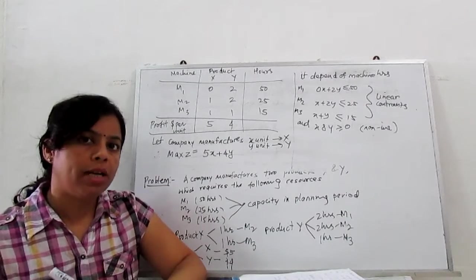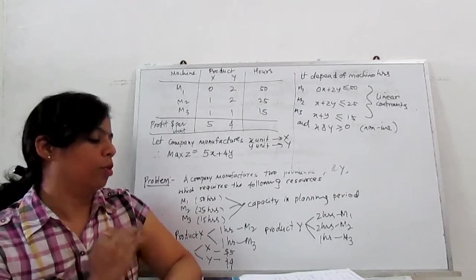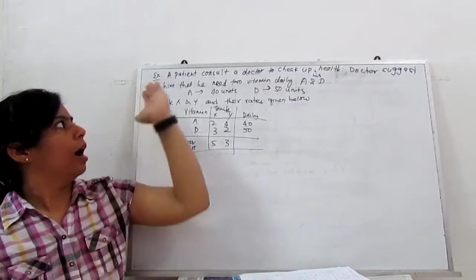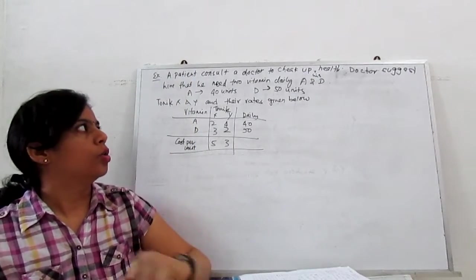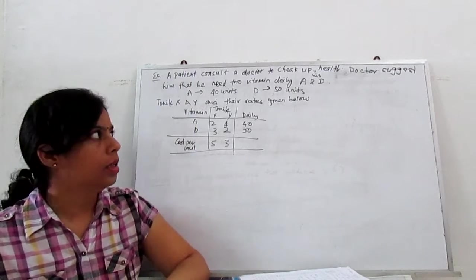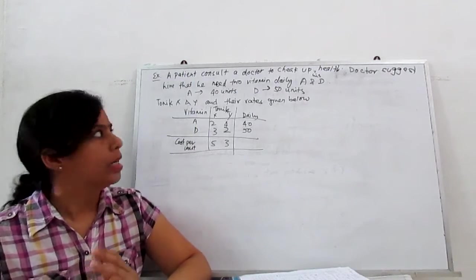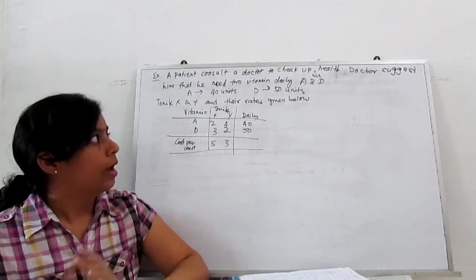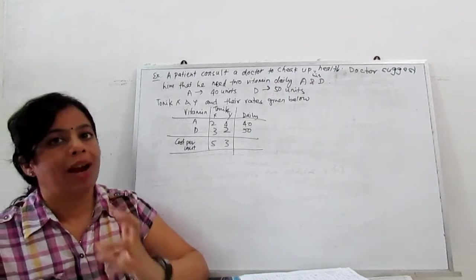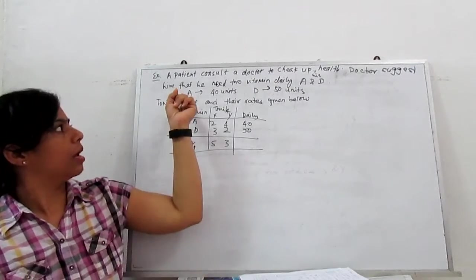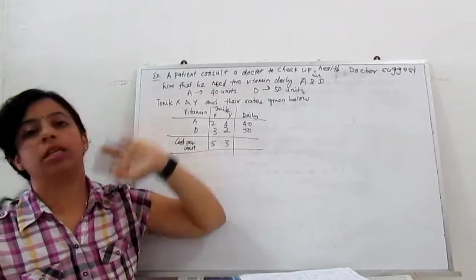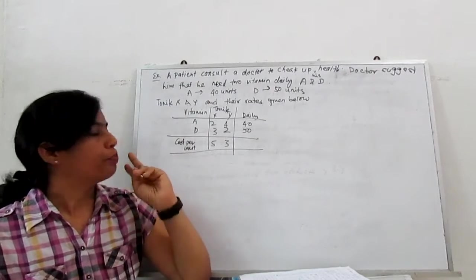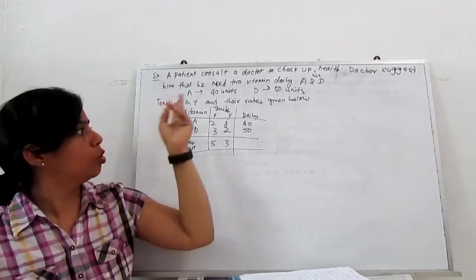Now I will show you one minimization problem formulation. A patient consults a doctor for his ill health. The doctor examines him and suggests he needs two vitamins to take daily: Vitamin A and D. The quantity he needs daily is 40 units of vitamin A and 50 units of vitamin D. There are two tonics.